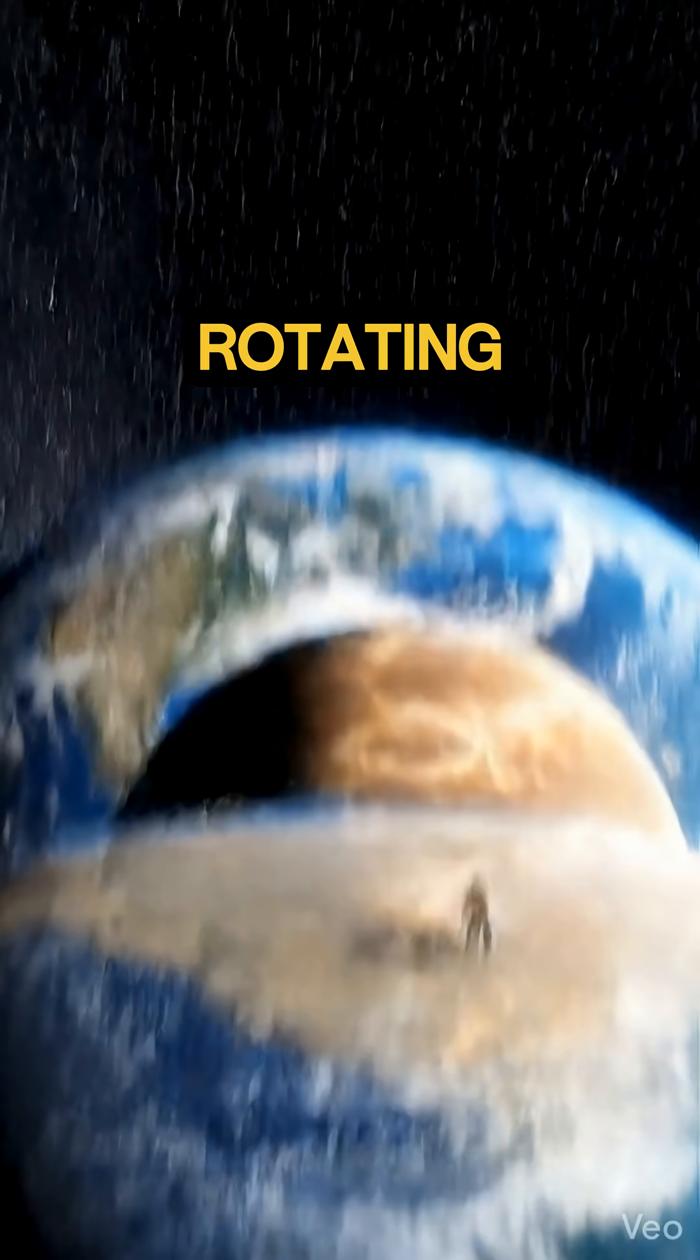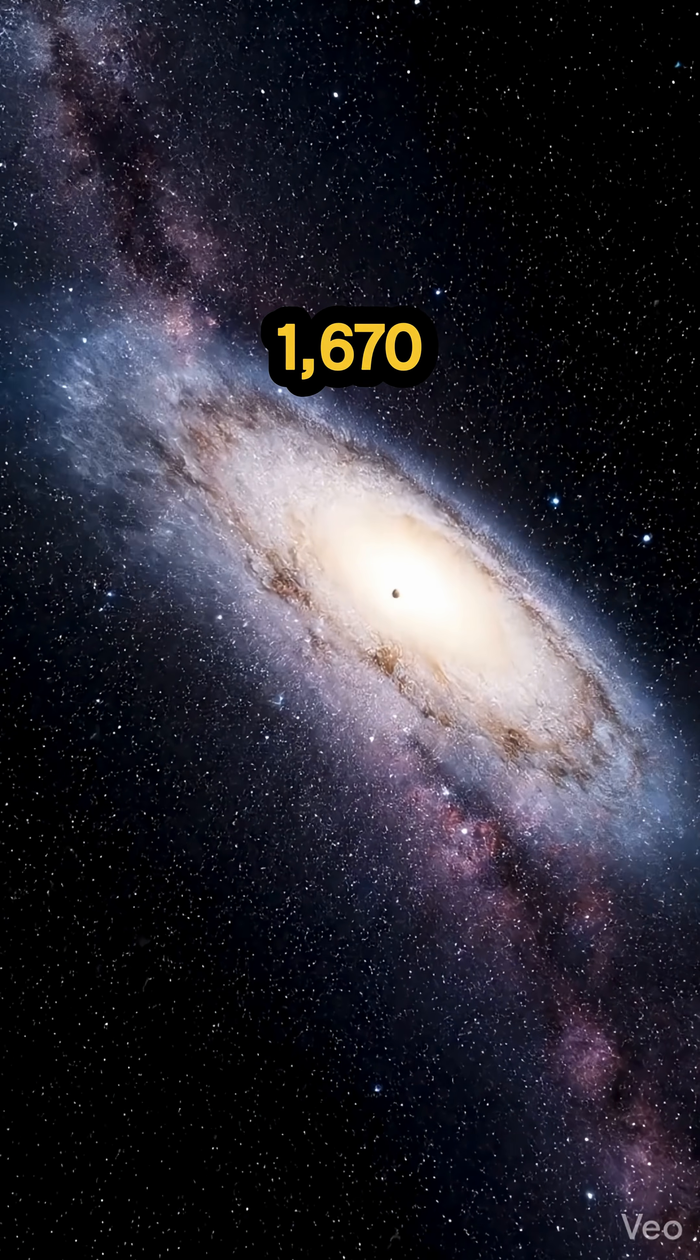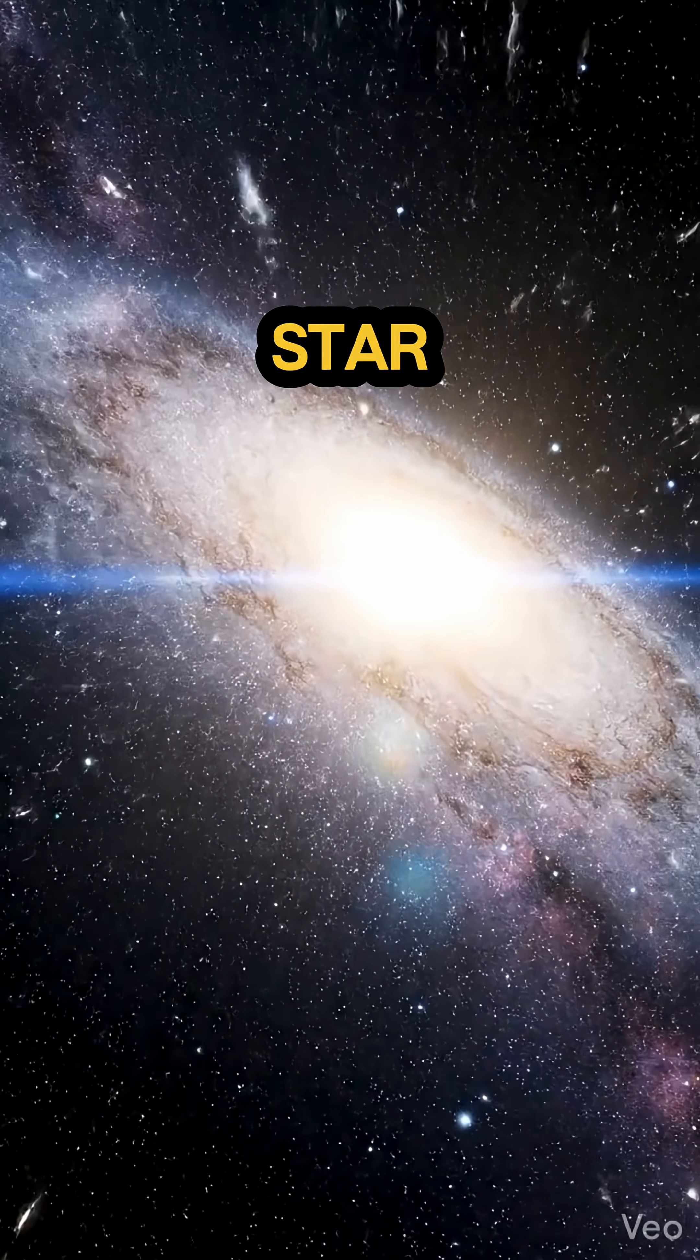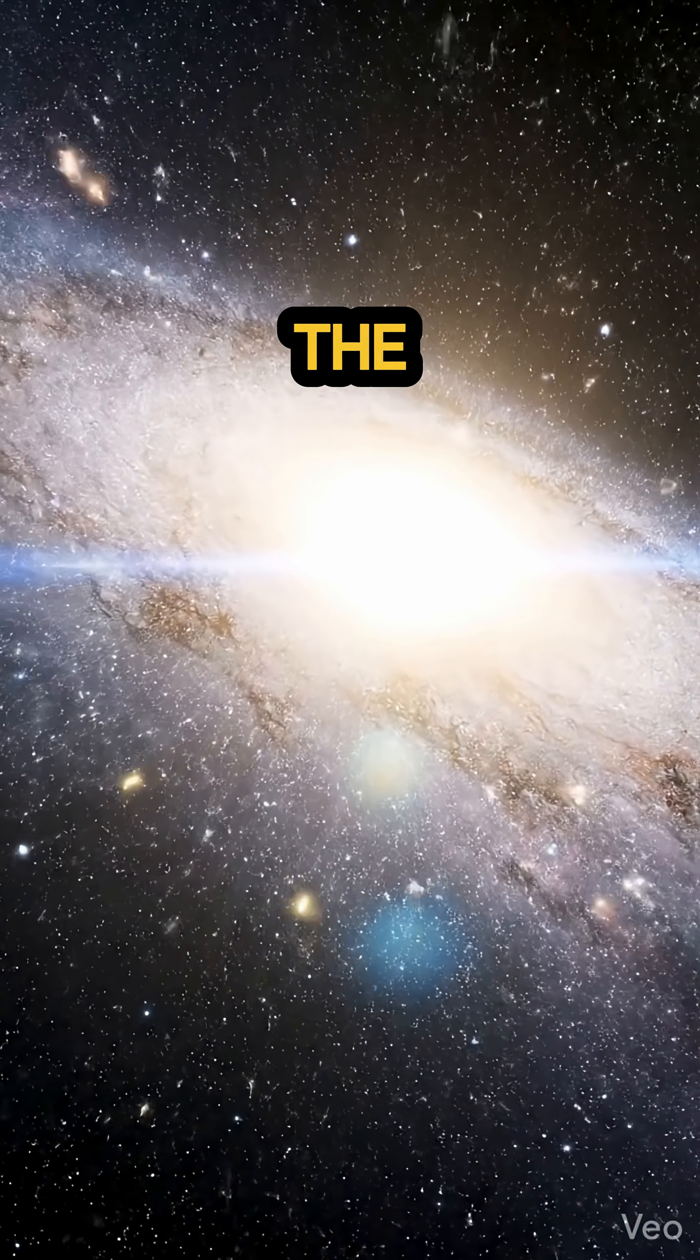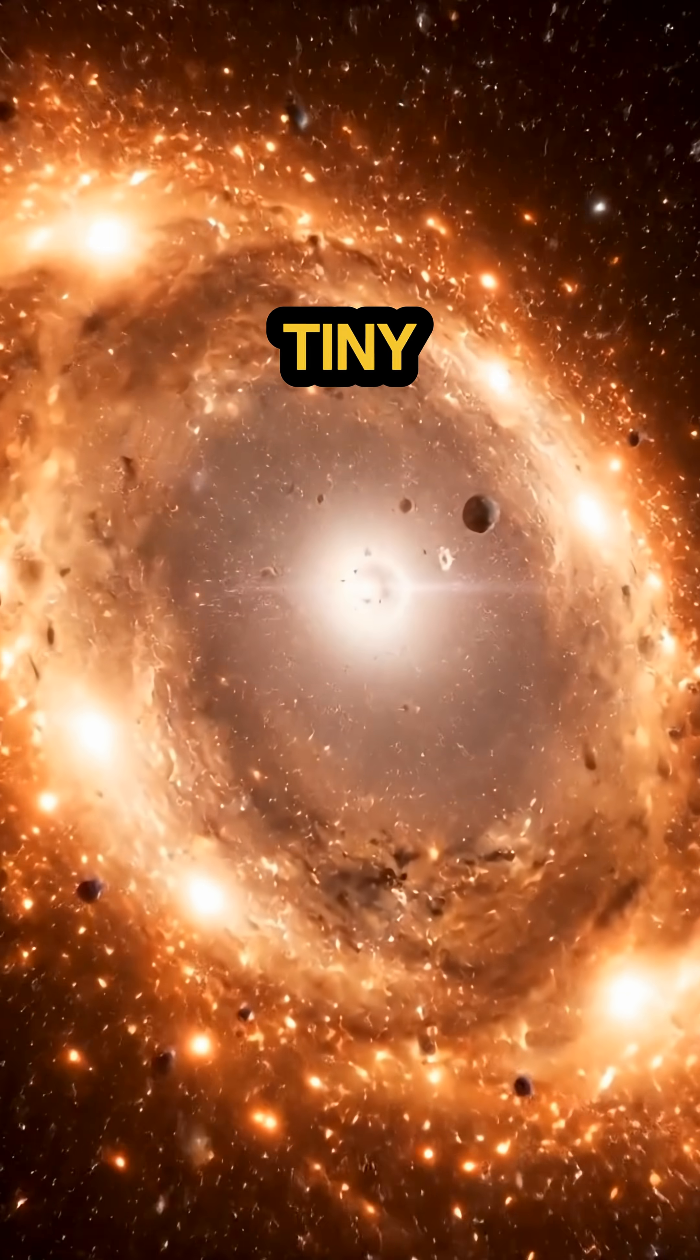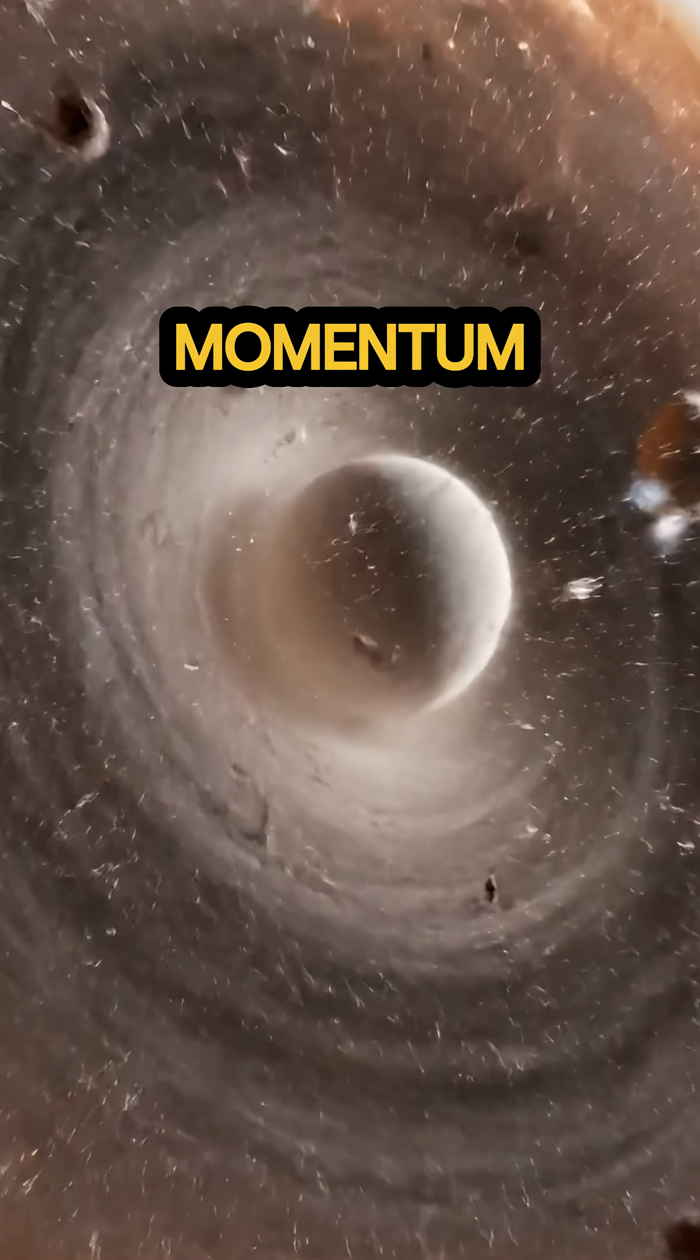You're standing on a planet rotating at 1670 kilometers per hour, orbiting a star that's racing around the Milky Way. This motion began at the birth of the universe when tiny imbalances after the Big Bang created angular momentum.